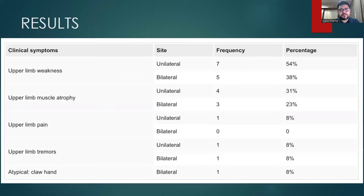The third table summarizes the presenting clinical symptoms. Upper limb weakness was the most common symptom seen in around 92% of patients — unilateral in seven patients and bilaterally asymmetric in five patients. Upper limb muscle atrophy was the second most common symptom, unilateral in four patients and bilateral in three patients. One patient each presented with unilateral and bilateral upper limb tremors, a relatively rare symptom. A seven-year-old female child presented with the atypical symptom of bilateral clawing of hands.